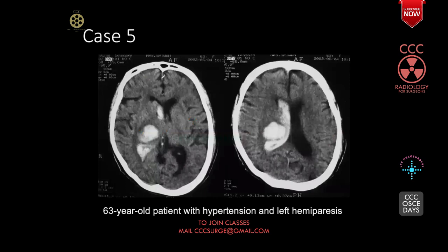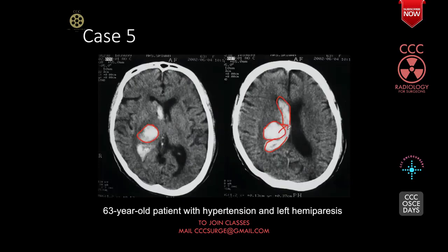Case number five: a 63-year-old patient with hypertension who suddenly presented with left hemiparesis. There is intraventricular hemorrhage — blood is inside the frontal horn as well as the body and trigone of the right lateral ventricle. There is also an intraparenchymal component — this is an intraparenchymal hemorrhage with intraventricular extension. Isolated spontaneous intraventricular hemorrhage is very rare; it is almost always an intraparenchymal — mostly hypertensive — bleed with intraventricular extension.